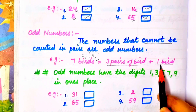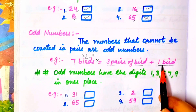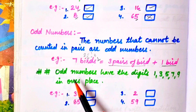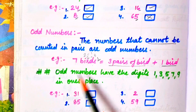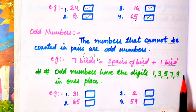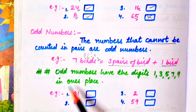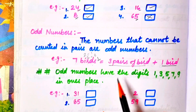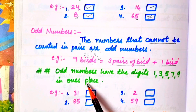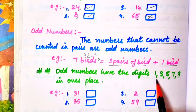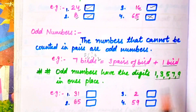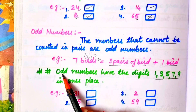So this will be our odd number, because here there is not a complete pair. In a simple way, odd numbers have the digits 1, 3, 5, 7, or 9 in the ones place. If there is an odd digit in the ones place, that is our odd number.